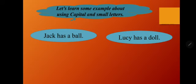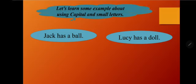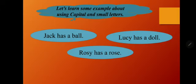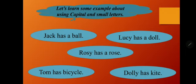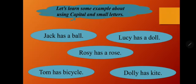'Lucy has a doll.' Lucy is a person's name — a girl's name — so its first letter L is in capital. Doll is a thing, so D is written in small. 'Rosie has a rose.' Rosie is a girl's name, so R is capital. Rose is a flower — a thing — so it is written in small. 'Tom has a bicycle.' Tom's first letter T is capital, but bicycle's B is not, because it is a thing. 'Dolly has a kite.' Dolly is a person's name so D is capital, but kite's K is not capital because it is a thing.